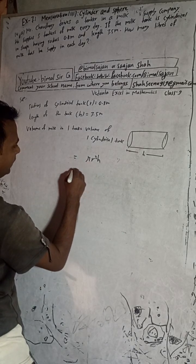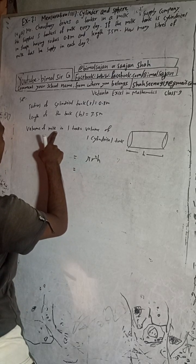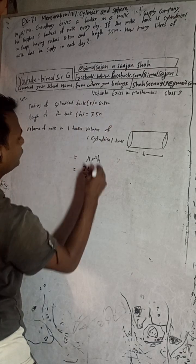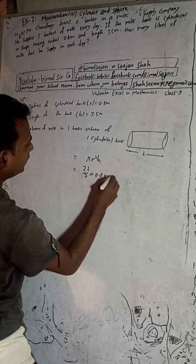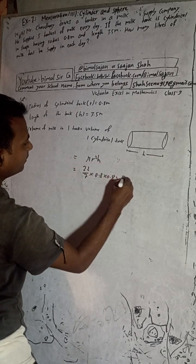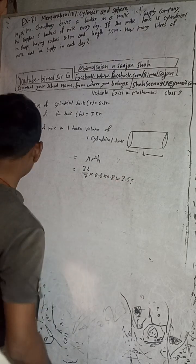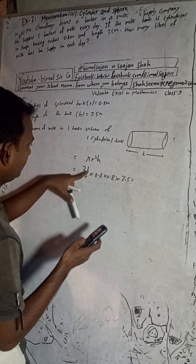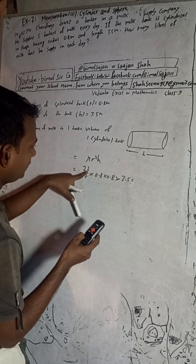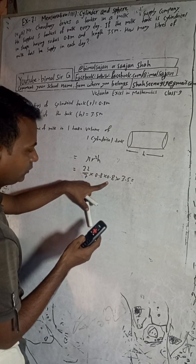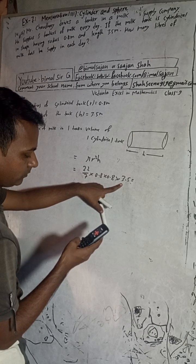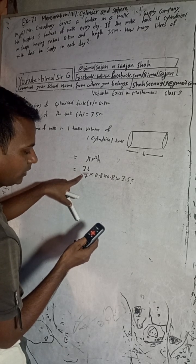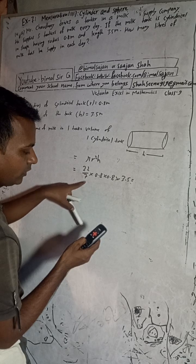Volume of milk in one tank = 22/7 × r² × h = 22/7 × 0.8 × 0.8 × 3.5. This equals 32 divided by 7, which gives 7.04 cubic meters.